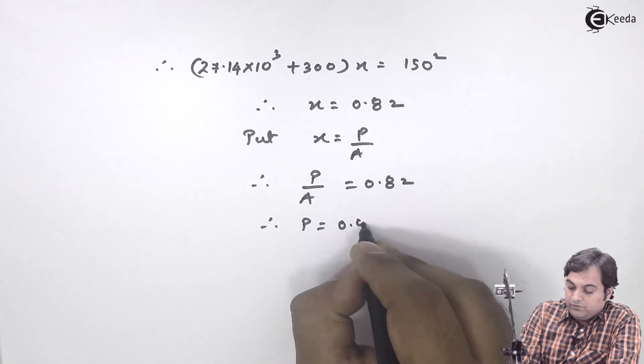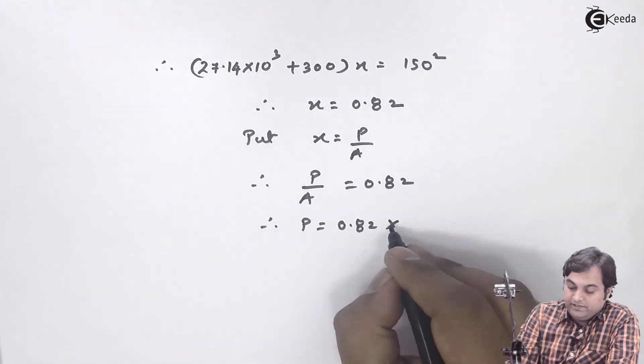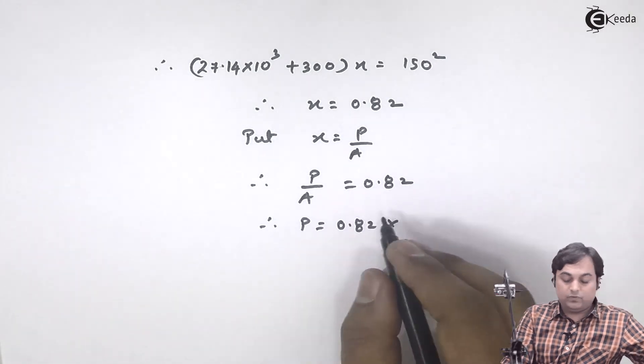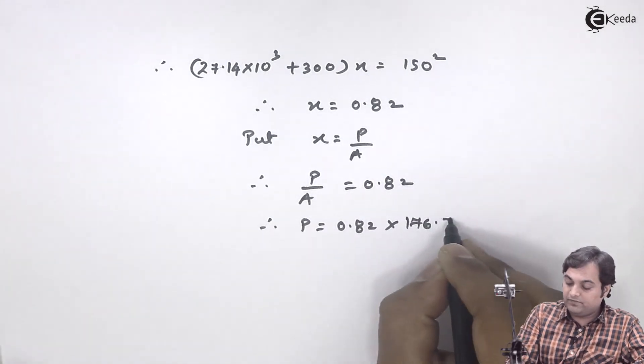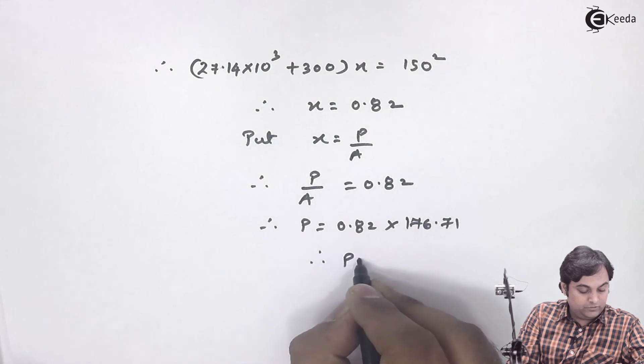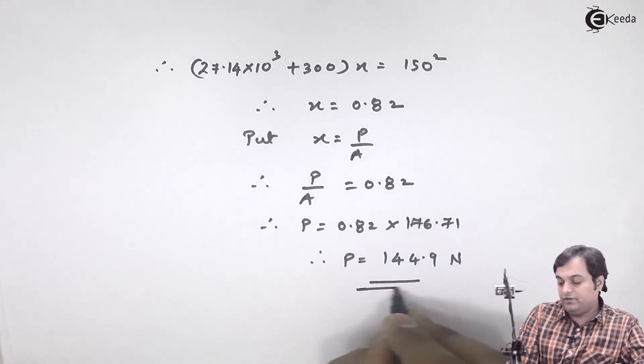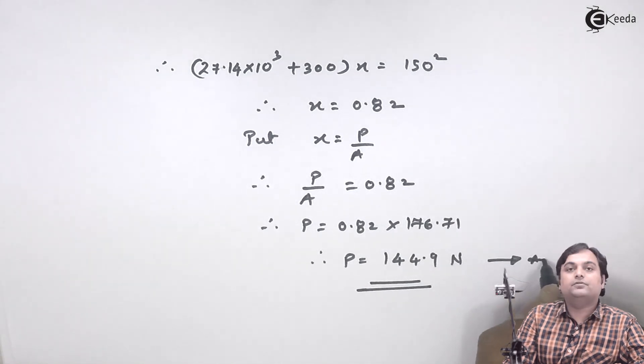P = 0.82 × area, and area is given as 176.71, and finally the load answer comes out to be 144.9 Newton. With this we complete the question.